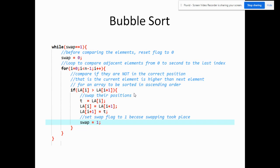Here is our bubble sort. While swap is equal to 1, before comparing elements we reset the flag to 0. Then we loop to compare adjacent elements from 0 to the second-to-last element — i equals 0 until i is less than n minus 1 — incrementing i by 1 each time. The next code compares if elements are not in the correct position. Since we are sorting from lowest to highest, the element with the lower index should be lower than the next element.